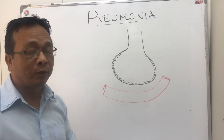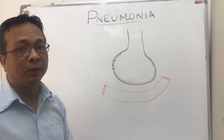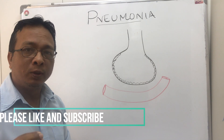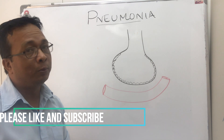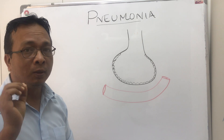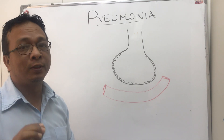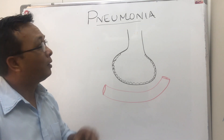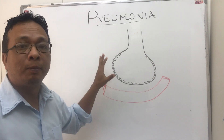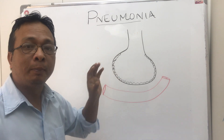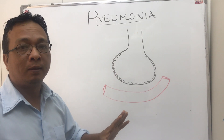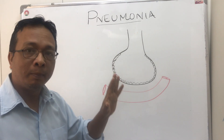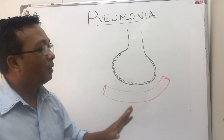Today we are going to discuss the pathophysiology of pneumonia. When it comes to pneumonia, remember it has only one line definition when you write in the exam: it's an infection of pulmonary parenchyma.